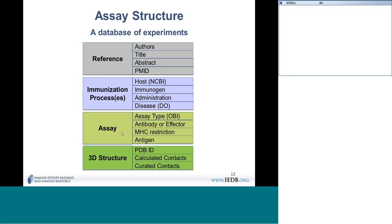Every host that is tested is captured — we don't exclude any hosts. Using NCBI taxonomy, you can describe the host, and we also capture the age, gender, geographic location. We capture what they were exposed to or injected with, which is the immunogen. If it was an injection, we capture the administration procedure: the route, dose, adjuvant, and any detail in the paper. If it was a disease exposure, we use disease ontology to describe the disease and capture whether it was acute, chronic, or post-exposure.